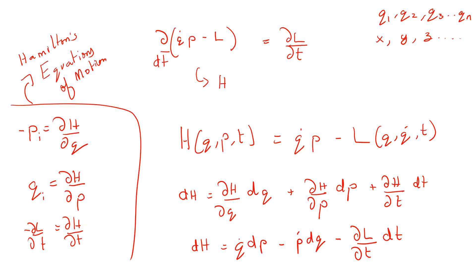This actually came to be important in the development of quantum mechanics. If you not only learn quantum mechanics but also learn about the history of its development, you will see how all these equations were actually used — the Hamilton equations and Hamilton-Jacobi theory were all used in the development of quantum mechanics.